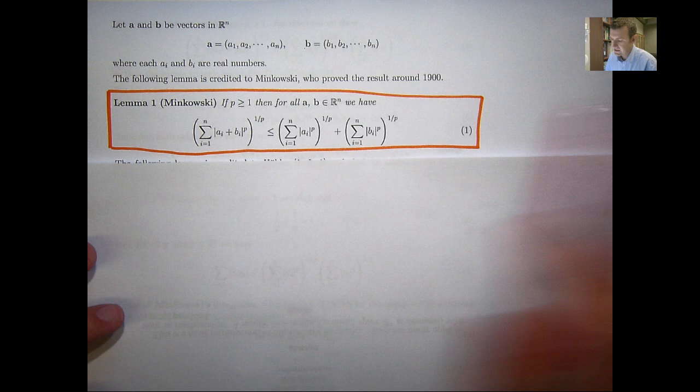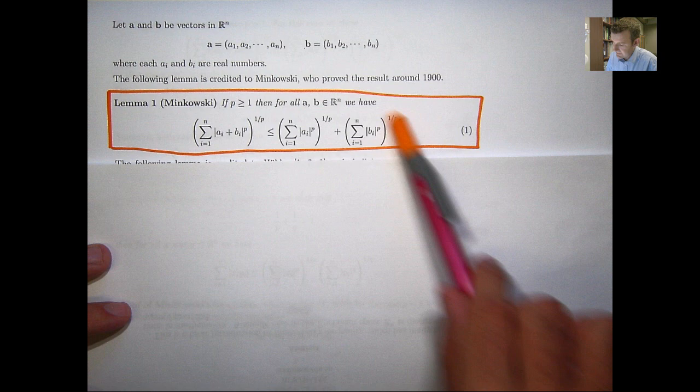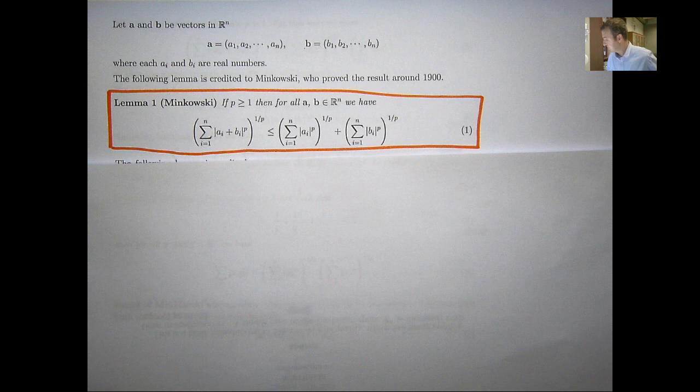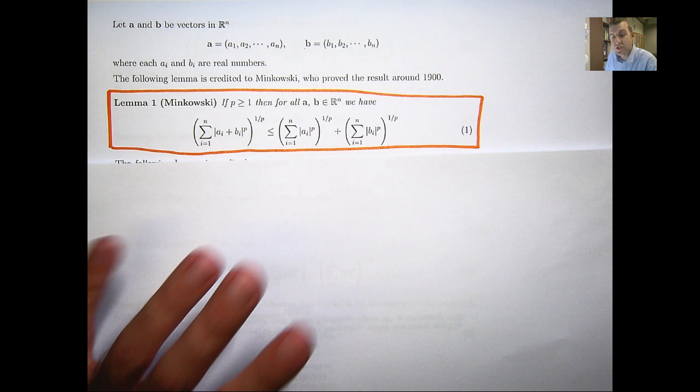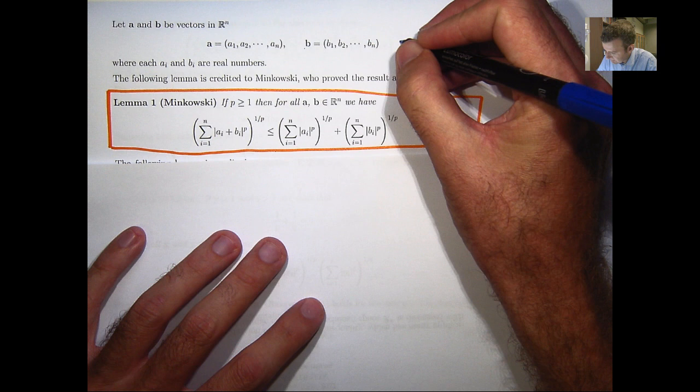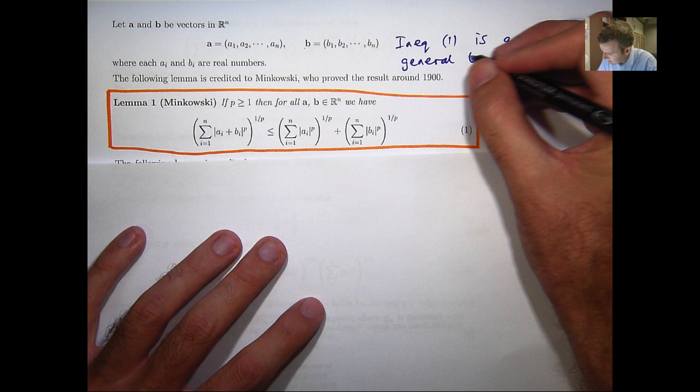So let P be a number greater than or equal to 1. Then for all pairs of vectors A and B in R^N, we have the following inequality. Now this looks rather abstract on a first viewing, so a couple of points to break it down into simple parts. The way I think of inequality 1 is just a general form of a triangle inequality. So inequality 1 is a general triangle inequality.